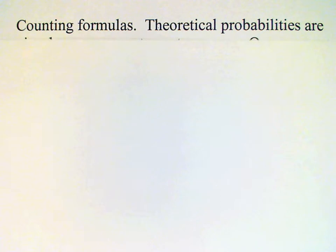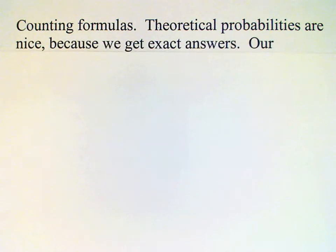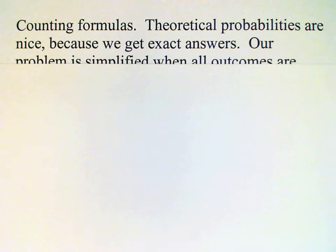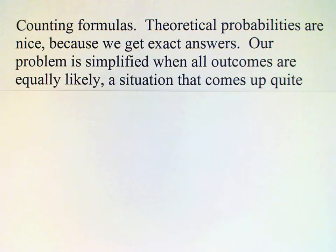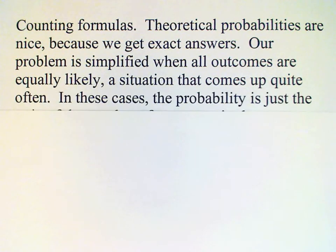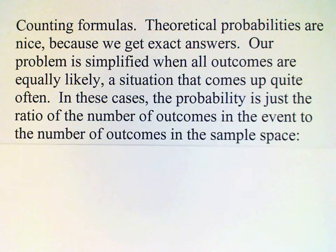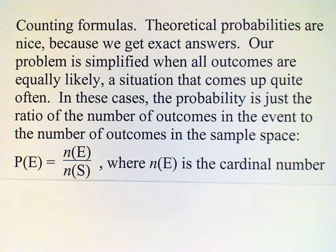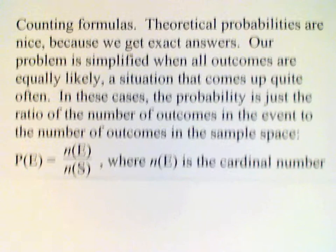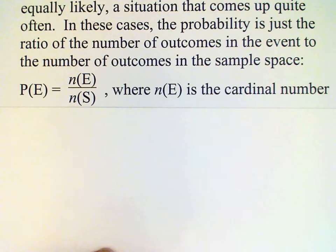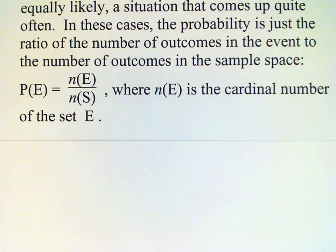Problems in theoretical probability are easier to deal with than those in the empirical branch because we come up with exact answers. There's no margin of error involved with theoretical probabilities. And the problem is particularly easy in the case where the outcomes in the sample space are equally likely. And when this is the case and we want to find the probability of a given event, then all we need to do is calculate the number of outcomes in the event and the number of outcomes in the sample space and then just take the ratio.